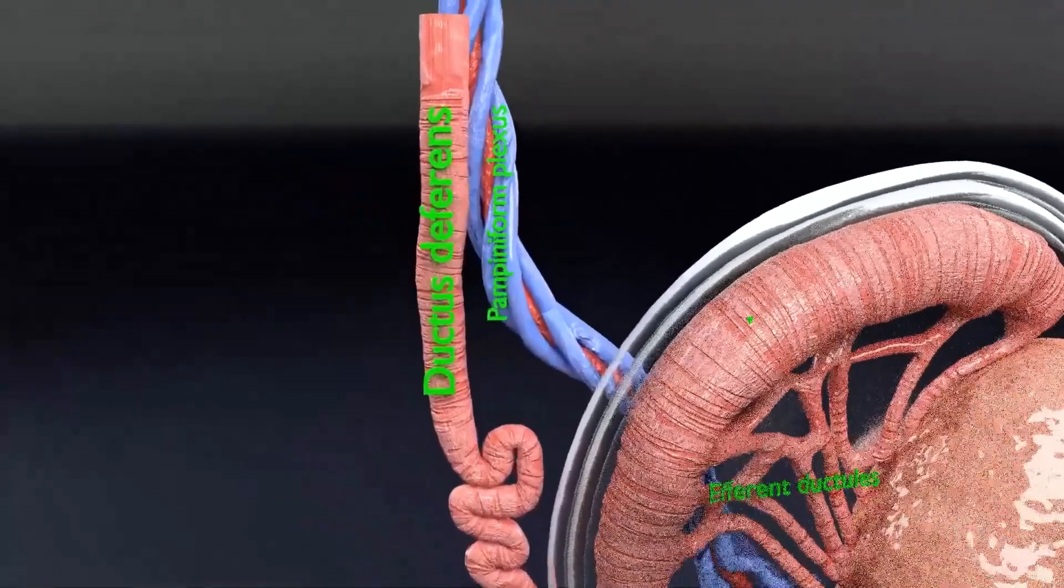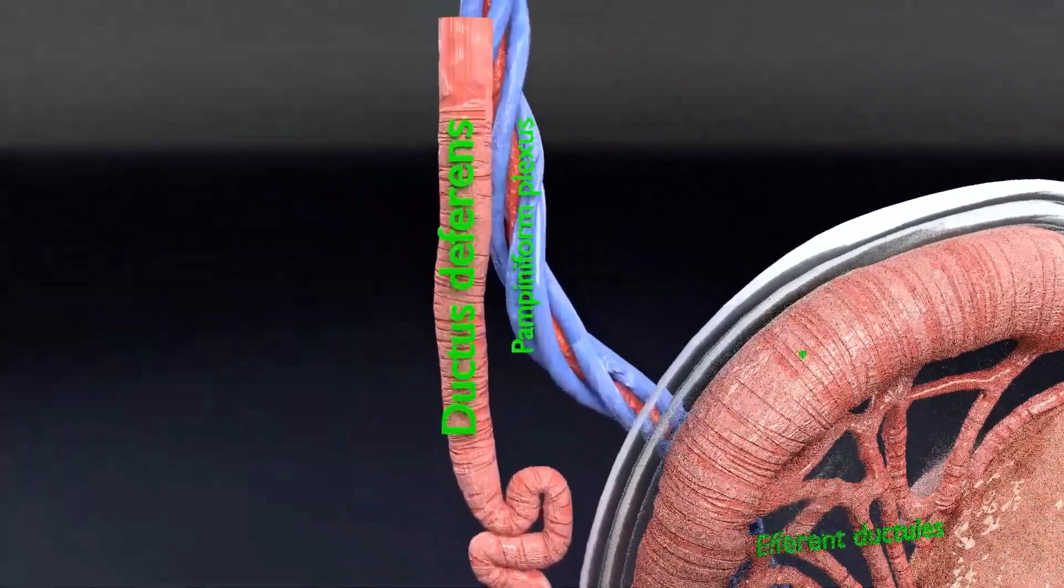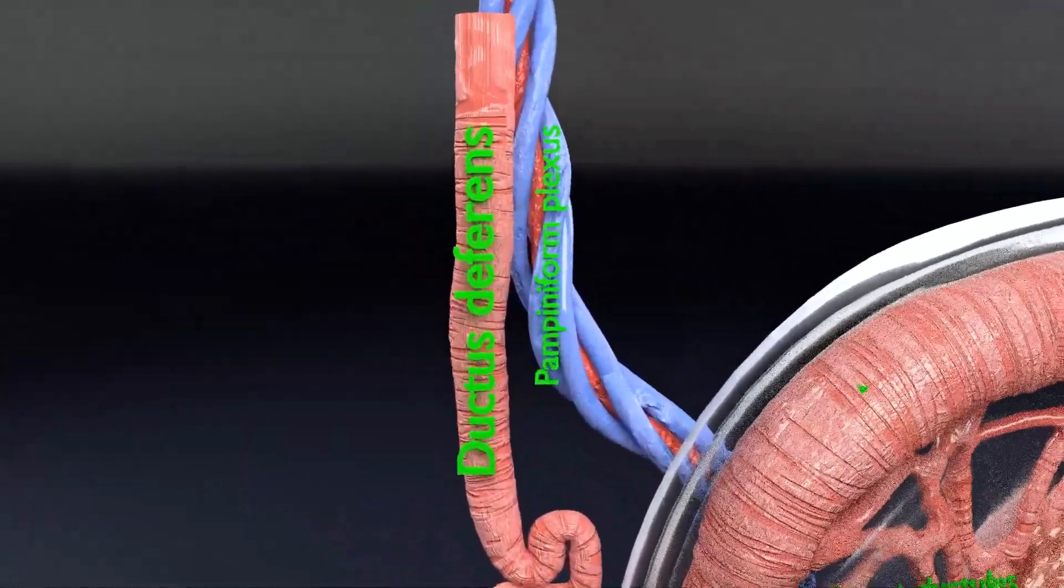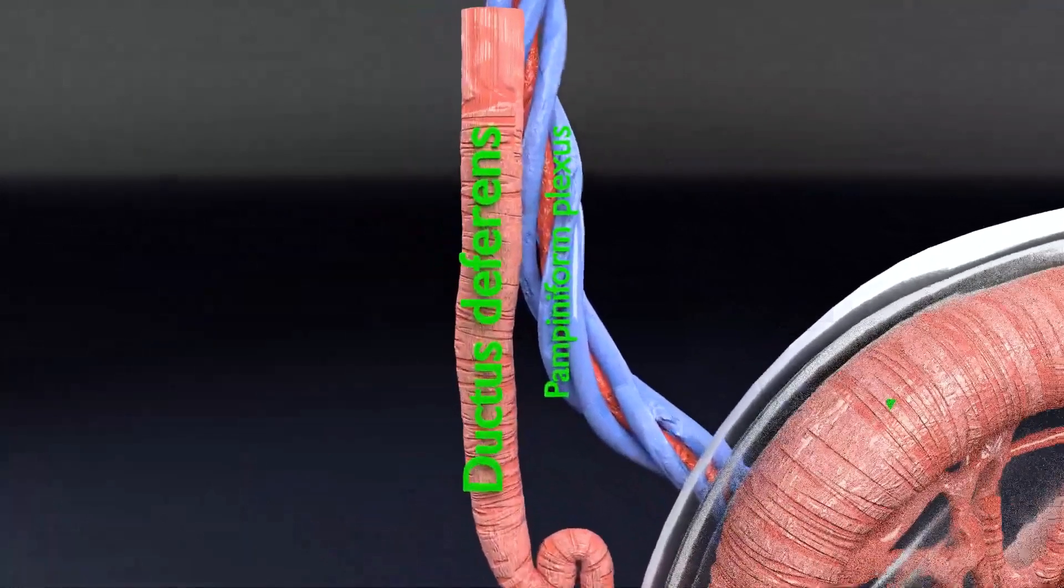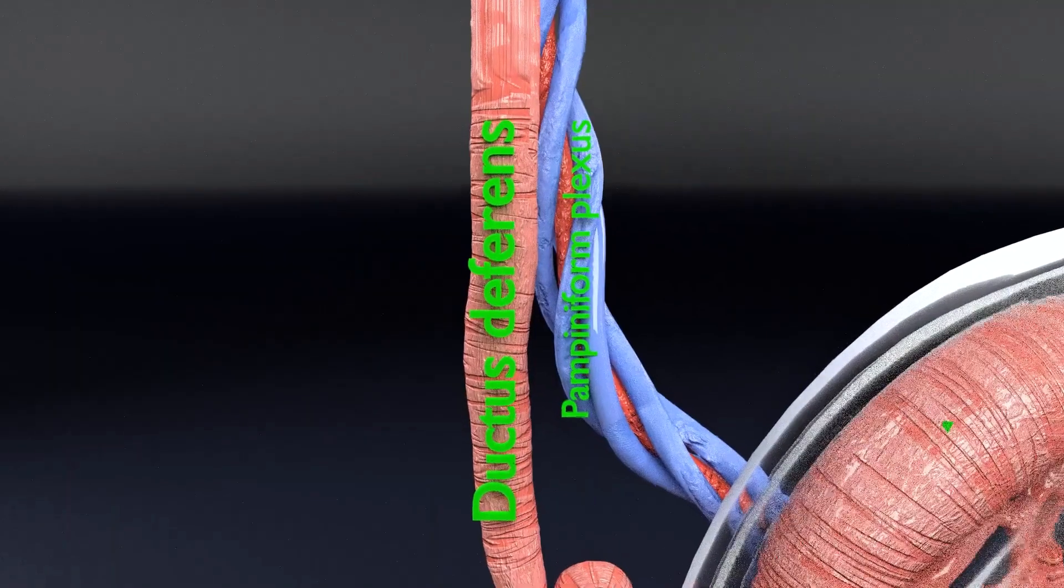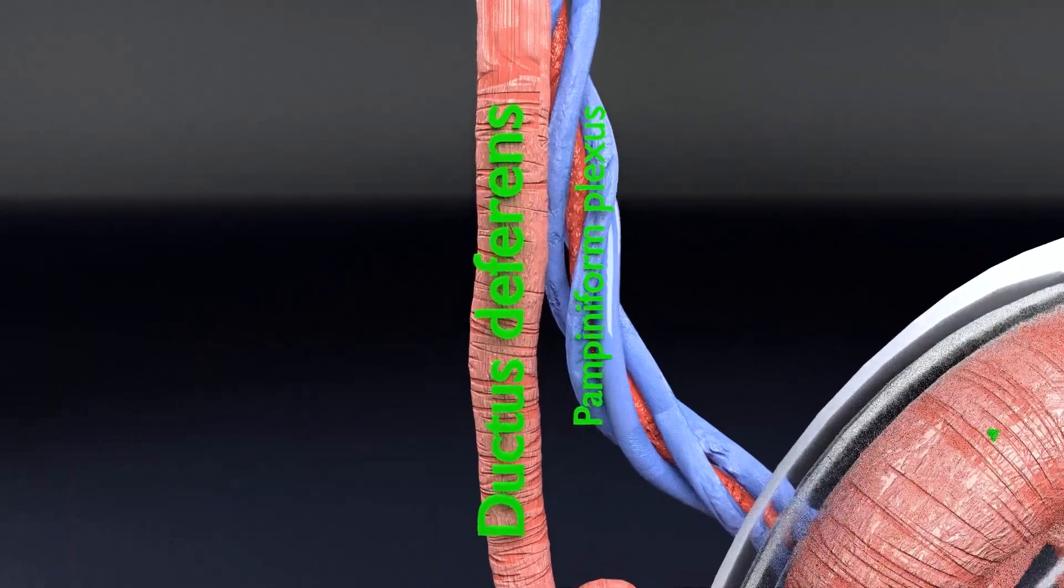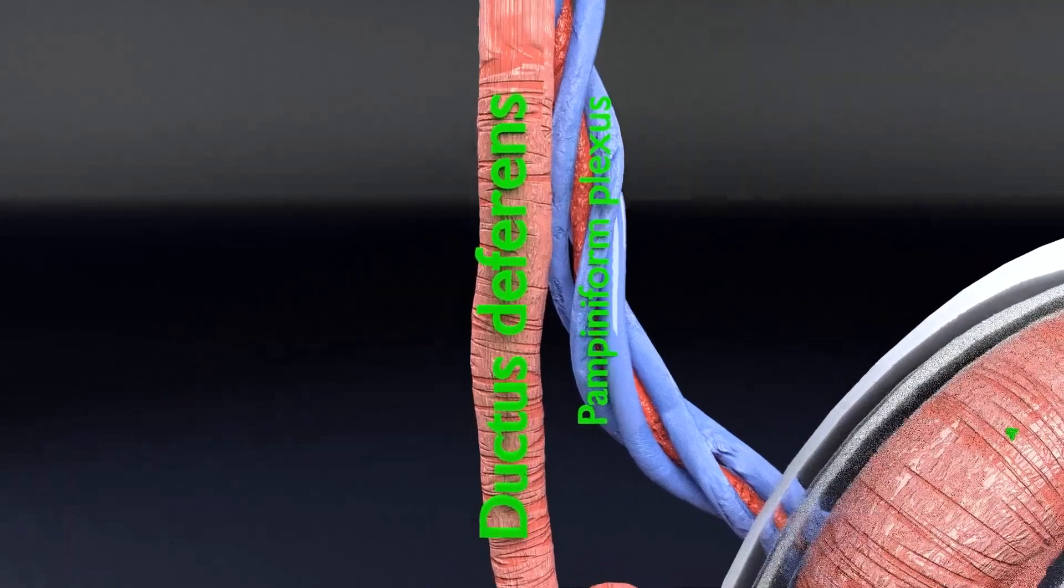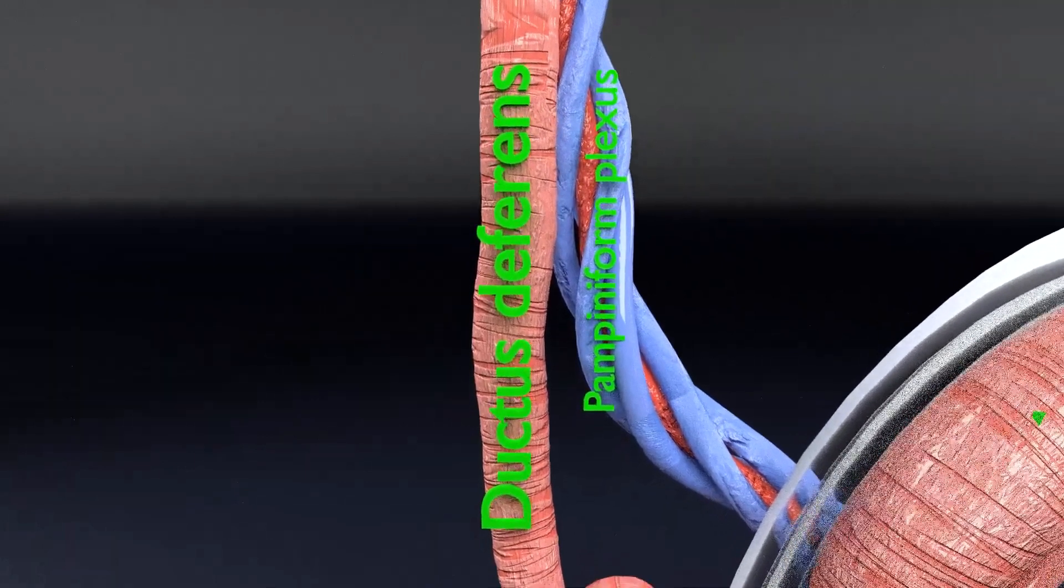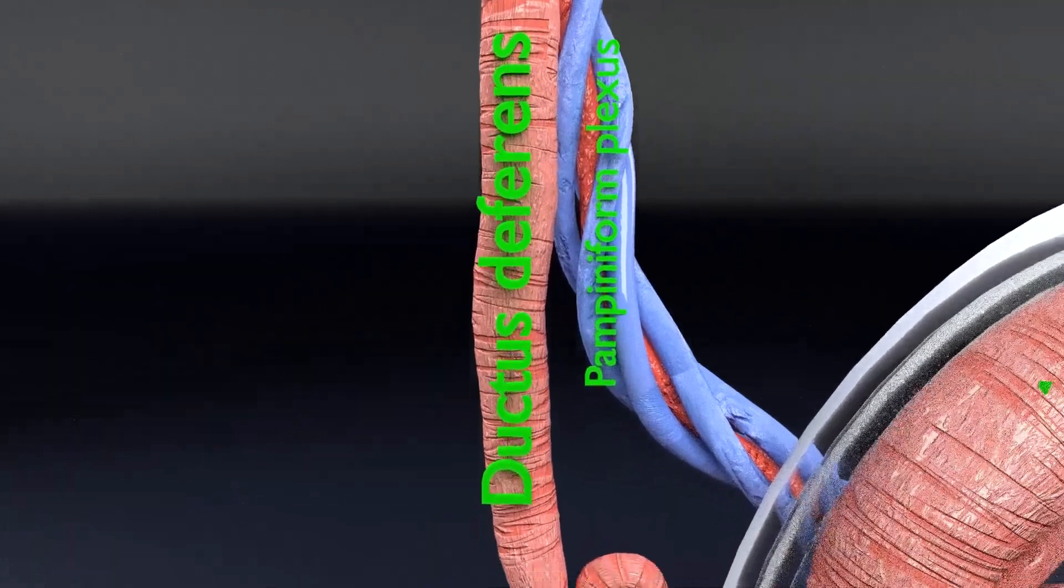Now you can see the pampiniform plexus. The pampiniform plexus is a loose network of small veins found within the male's spermatic cord. The veins of the plexus ascend along the spermatic cord at the front of the ductus deferens. The pampiniform plexus helps regulate the temperature of the testes by acting as a heat exchanger to cool down the blood.